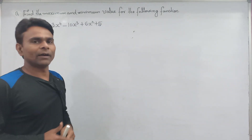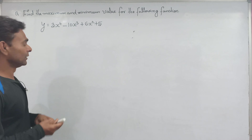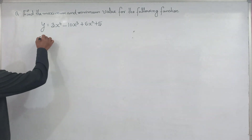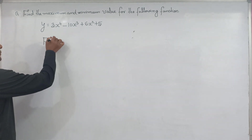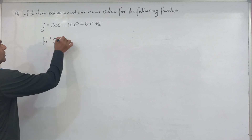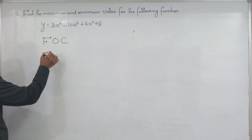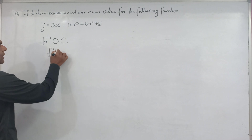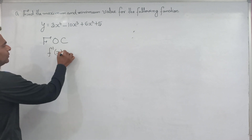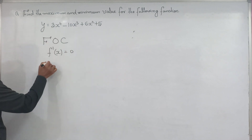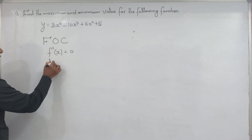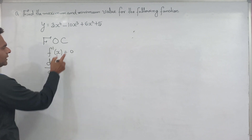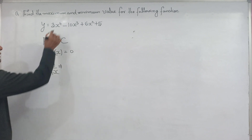You have to identify the maximum and minimum value. So the first order condition: what happens in the first order condition is that the first derivative is equal to 0. The first derivative dy/dx is set equal to 0.